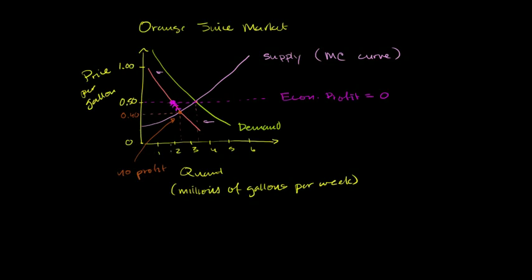Now consider the opposite: a report comes out saying oranges are very good — they make you live longer. At any given price, demand increases, so the demand curve shifts right, giving a higher equilibrium quantity and a higher equilibrium price. Since price is now above the zero-economic-profit level, firms are earning strongly positive economic profits. That creates a strong incentive for new entrants — they're not neutral anymore. More and more people acquire equipment and hire workers, so quantity rises and price falls back down over the long run.